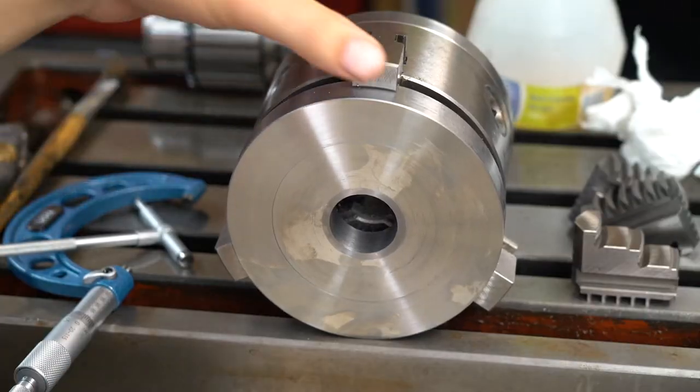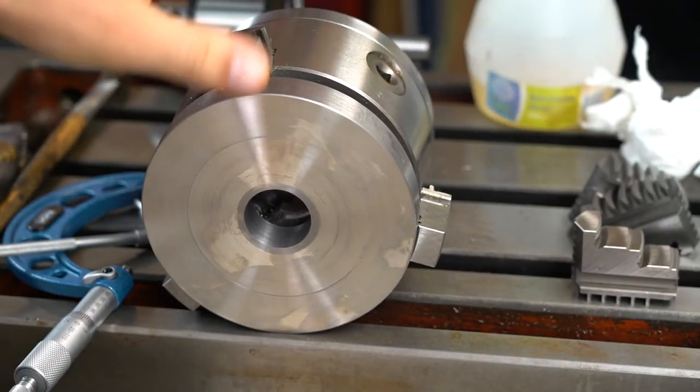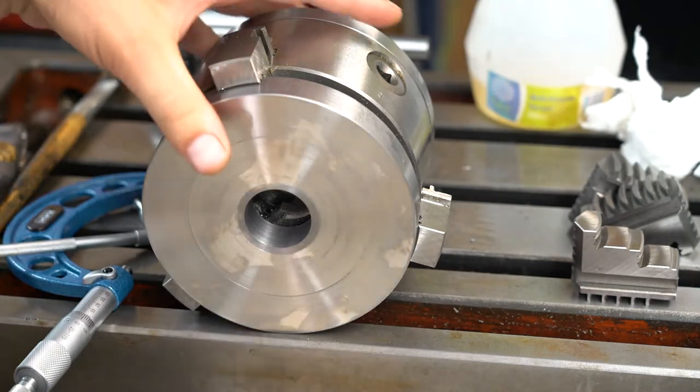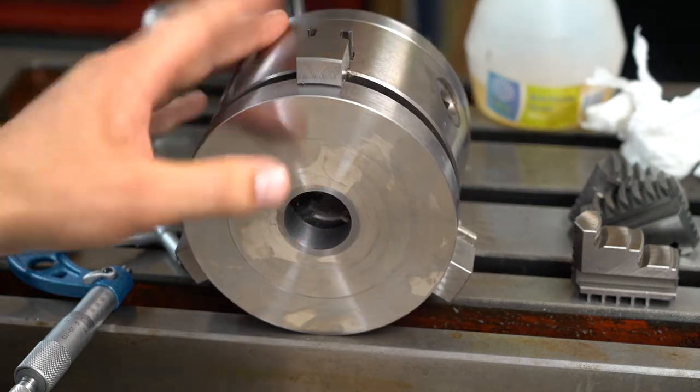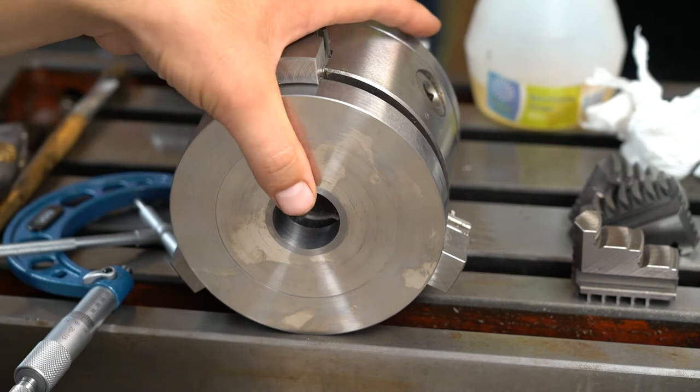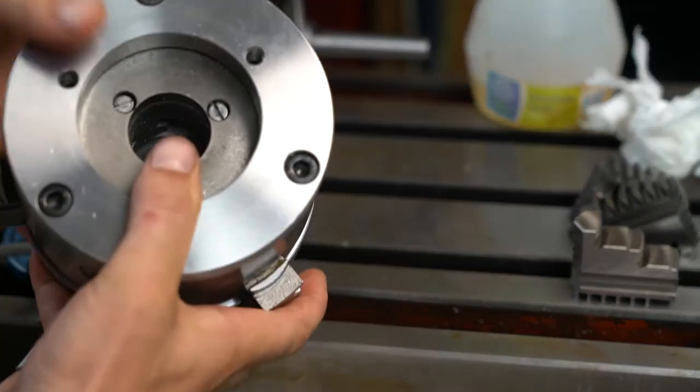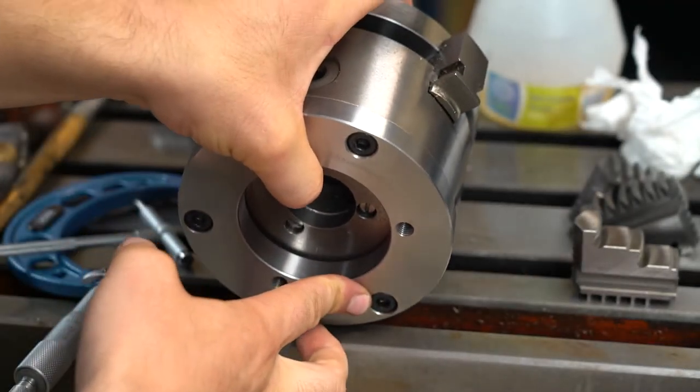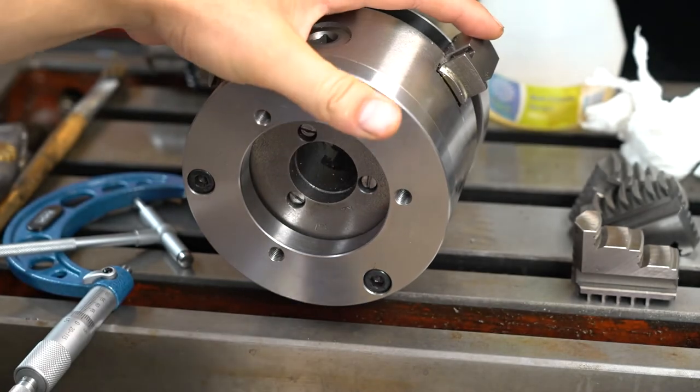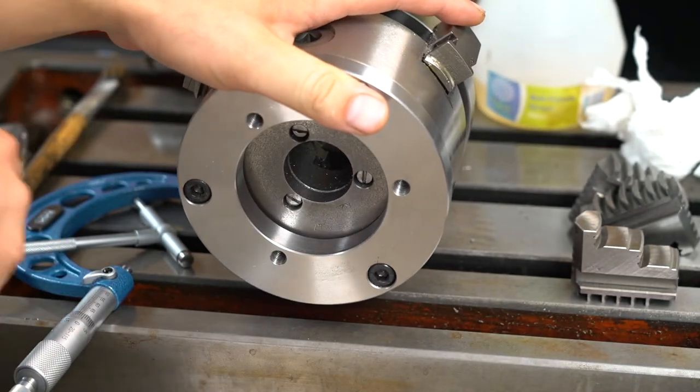As you can see I've started boring out the back plate. I've just taken the chuck out of the lathe to double check and measure the diameter of the boss that I need.